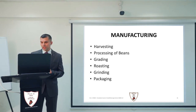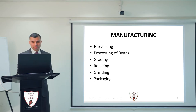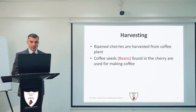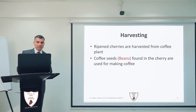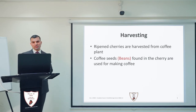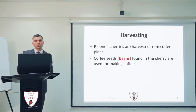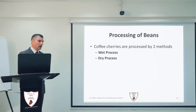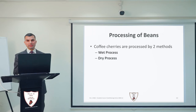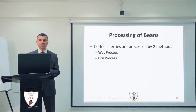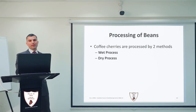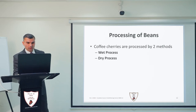Moving ahead to the manufacturing process of coffee, it starts with harvesting and goes till packaging. The first step is harvesting. Coffee is made from the cherries, so we harvest ripened cherries from the coffee plant. The coffee beans which are found in the cherry are used for making coffee. The next step is processing of these beans.